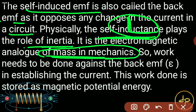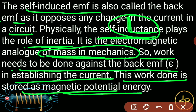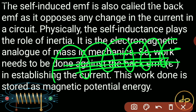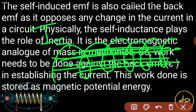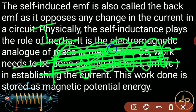If we are supplying current to a solenoid and we increase the current, then work needs to be done against the back EMF. This work done to establish the current and establish a magnetic flux inside the solenoid is stored as potential energy in the form of flux inside the solenoid.